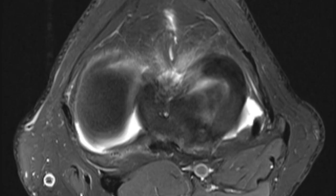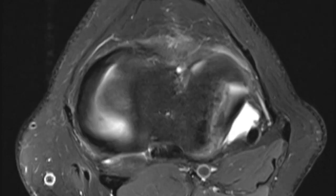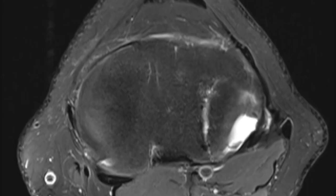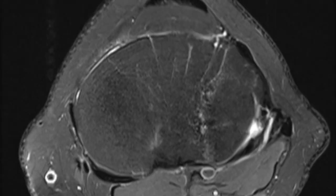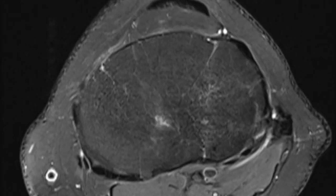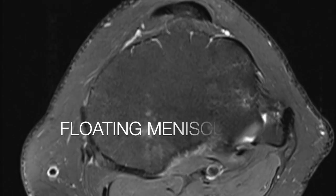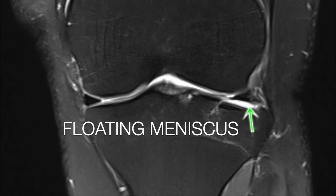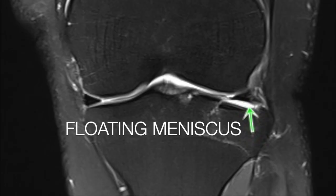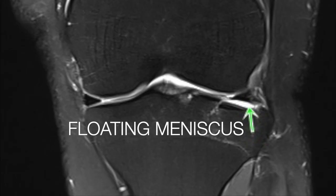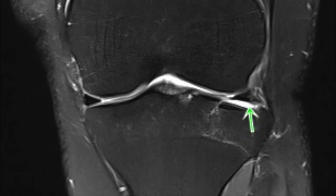This particular appearance of meniscus with fluid between meniscus and lateral tibial plateau is termed as floating meniscus, and is seen in meniscotibial ligament disruption leading to avulsion of meniscus from the tibial plateau.